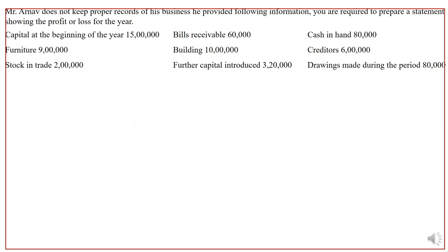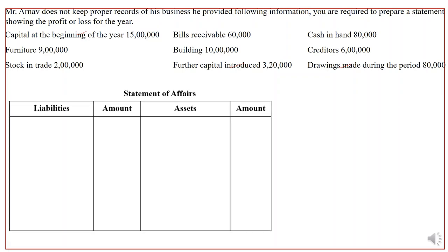Mr. Arnau does not keep proper records of his business. He provided the following information and we are required to prepare a statement showing profit or loss for the year. Opening capital is given along with bills receivable, cash in hand, furniture, stock in trade, building, further capital, creditors, and drawings. Since opening capital and additional capital are given but closing capital is not, we need to prepare a statement of affairs at the end of the period to calculate the closing capital.